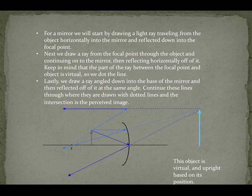Lastly, we draw a ray angled down into the base of the mirror and then reflected off of it at the same angle. Continue these lines through where they are drawn with dotted lines, and the intersection is the perceived image. This object is virtual and upright based on its position.